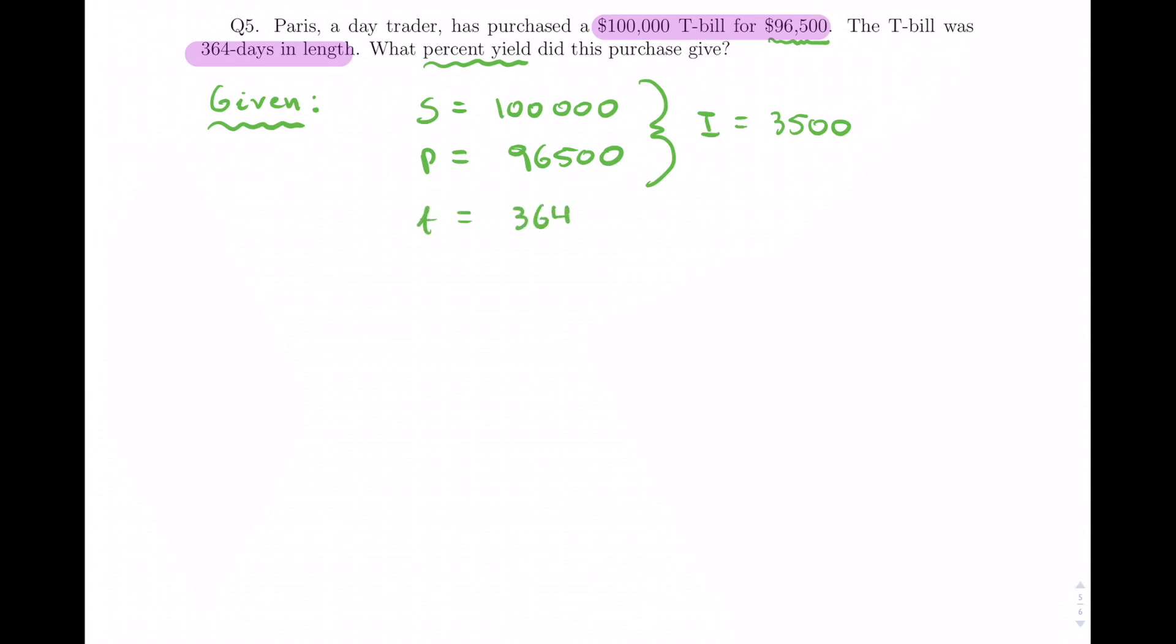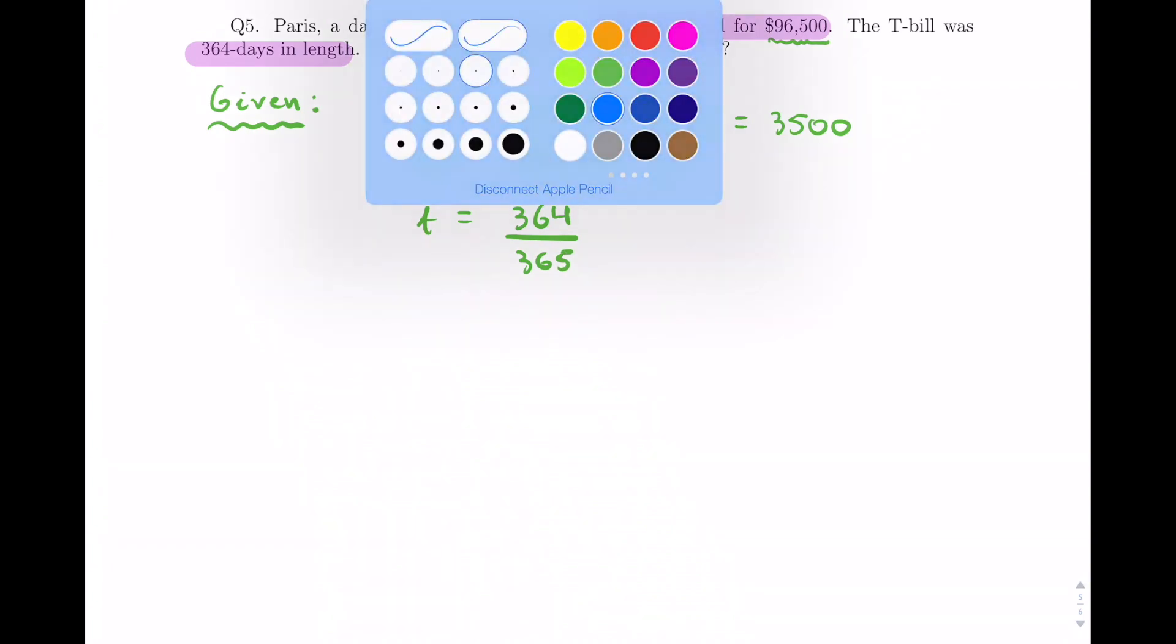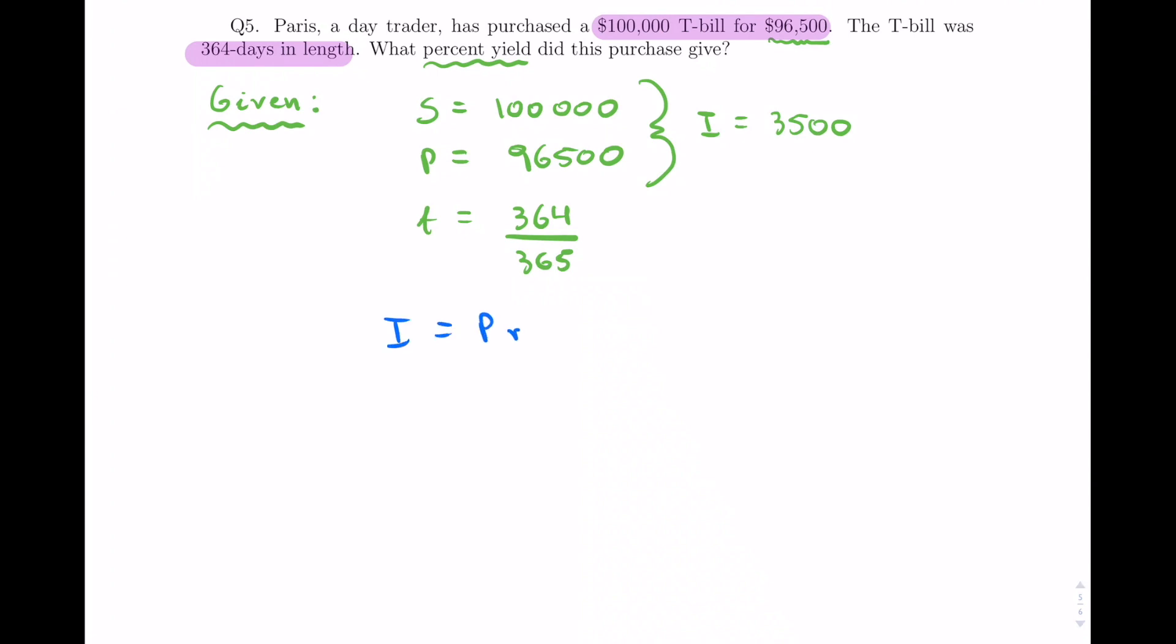Okay, well, so let's find it. So I is equal to PRT. Okay, so P is 96,500, we don't know the rate, we do know the time.